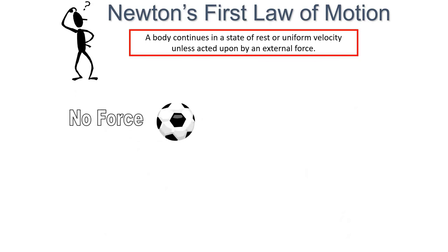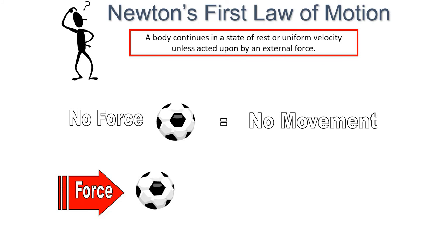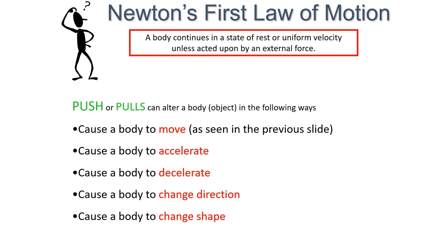So you can see here, just to reiterate, that if there is no force on the object, then there is no movement. However, once a force is applied, then we have movement. And the force can be applied as a push or a pull. And a push or a pull can alter a body or an object in the following ways. It can cause a body to move, as seen previously.